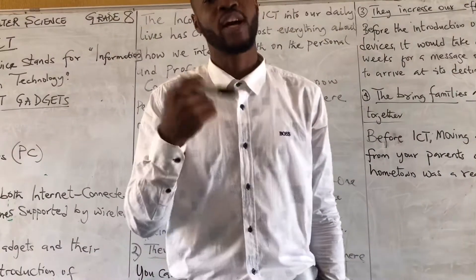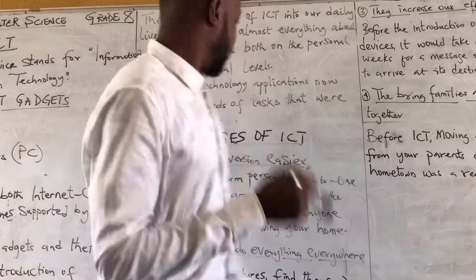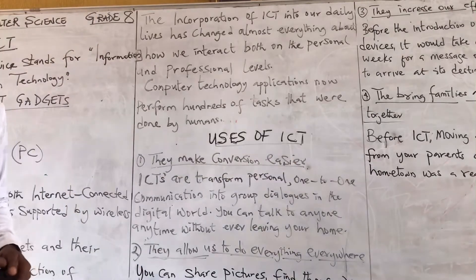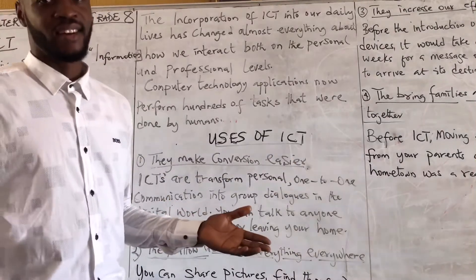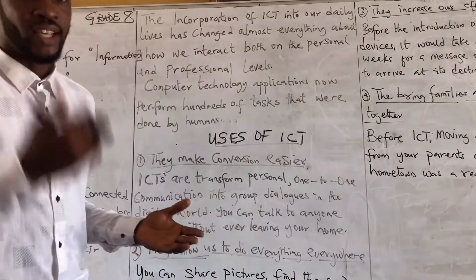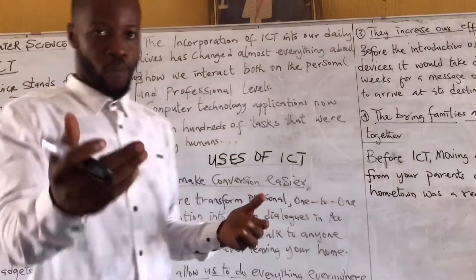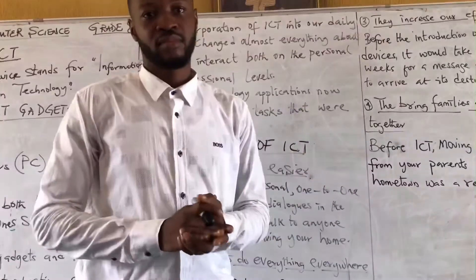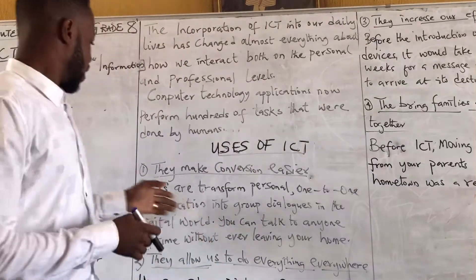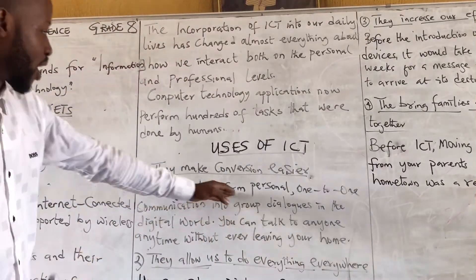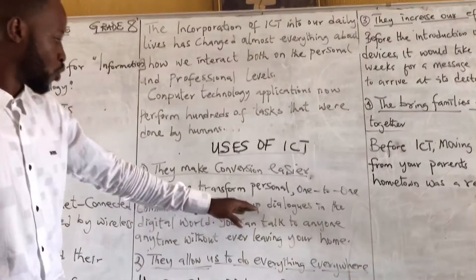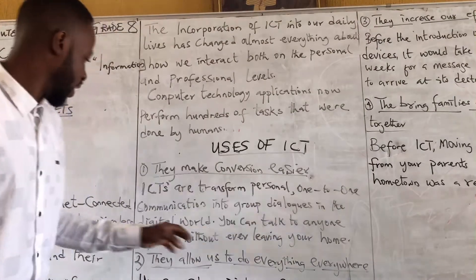Now let's talk about the uses of ICT. First, ICT makes conversation easier and makes relationships easier. Right now I am online — there is a school where we can interact via mobile or via social media, all because of ICT. ICT has transformed personal one-to-one communication into group dialogues in the digital world.